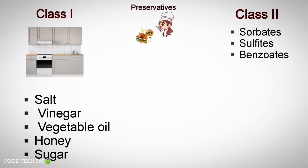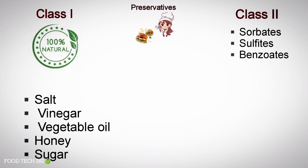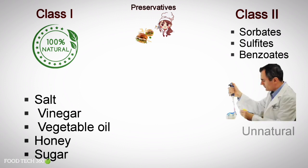Sorbates, sulfates, and benzoates are some of the Class 2 preservatives used. While Class 1 preservatives are found in nature, Class 2 preservatives are man-made and considered unnatural preservatives.